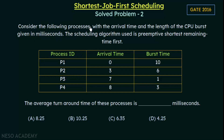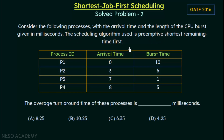Consider the following processes with the arrival time and the length of the CPU burst given in milliseconds. The scheduling algorithm used is preemptive shortest remaining time first. We are given a set of four processes P1 to P4 with their arrival times and burst times given in milliseconds, and the scheduling algorithm used is preemptive shortest remaining time first.